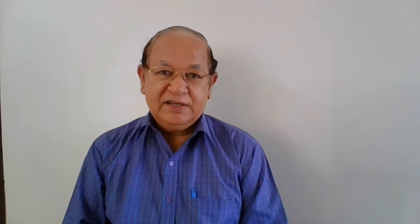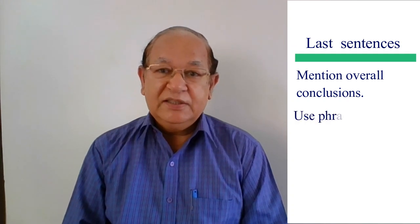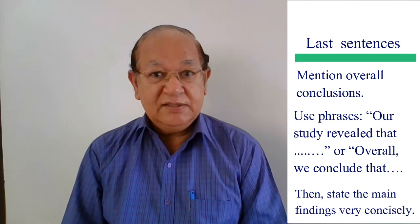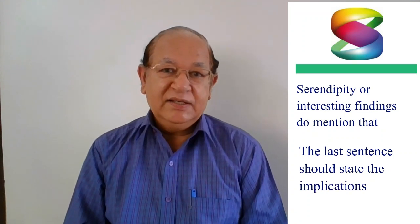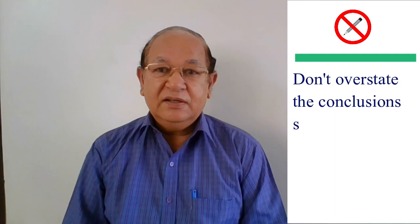Which information from the discussion and conclusion section should be included? The last couple of sentences should mention the overall conclusions. Authors often use phrases such as 'our study revealed that' or 'overall we conclude that,' followed by their main findings stated very concisely. If you have interesting or serendipitous findings, mention those as well. The last sentence should state the implications of the major findings or describe how your work has added to the existing knowledge pool. Remember, many readers only have access to the abstract, so it is very important not to overstate your conclusions.